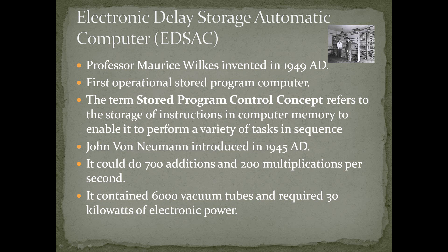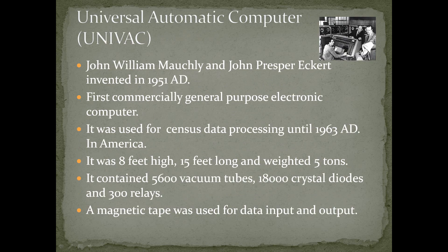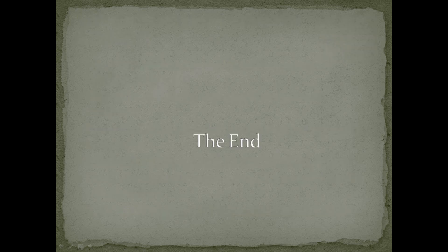EDSAC contained 6,000 vacuum tubes and required 30 kilowatts of electric power. UNIVAC — Universal Automatic Computer — was invented by John William Mauchly and John Presper Eckert in 1951 A.D. It was the first commercially available general-purpose electronic computer. It was used for census data processing until 1963 A.D. in America. It was 8 feet high, 15 feet long, and weighed 5 tons. It contained 5,600 vacuum tubes, 18,000 crystal diodes, and 3,000 relays. A magnetic tape was used for data input and output.